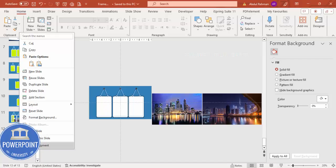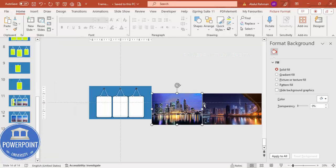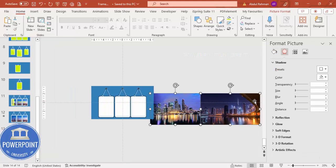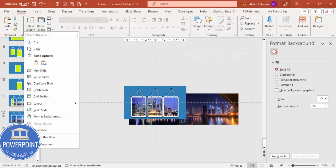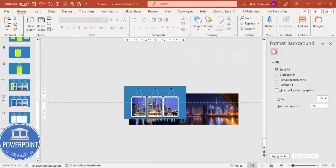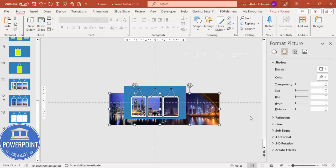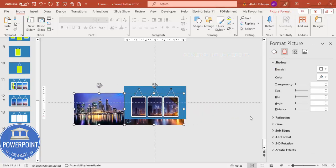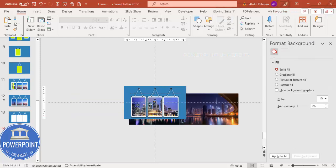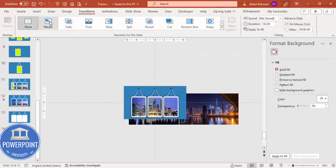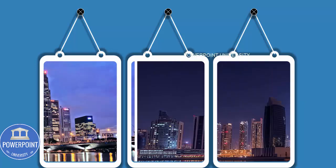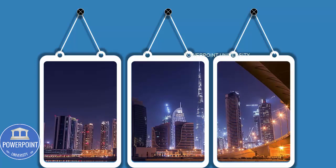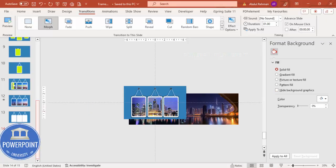Now duplicate the slide and move the image so it's visible in the correct frame position. Duplicate again and move the second image so it's visible in the frames. Select the last two slides, go to Transitions, make it Morph, and set the duration to one second. When you click, the first image appears, then the second image — you can add as many images as you want depending on the requirement.